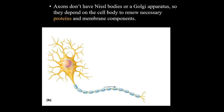Next, for myelin sheath: you need to know it's made by oligodendrocytes in the CNS and Schwann cells in the PNS. You need to know it creates insulation, and you need to know that it helps speed impulse transmission.